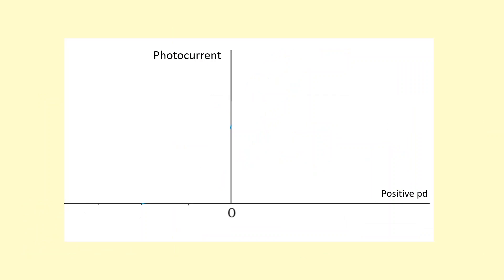So this whole process can be represented on a graph. On the y-axis, we've got the photocurrent, basically the amount of charge that's flowing around the circuit. On the x-axis, we've got the potential difference. We're going to start with the positive potential difference. So when we apply a positive potential difference, we notice that the current is fairly constant, doesn't really change much.